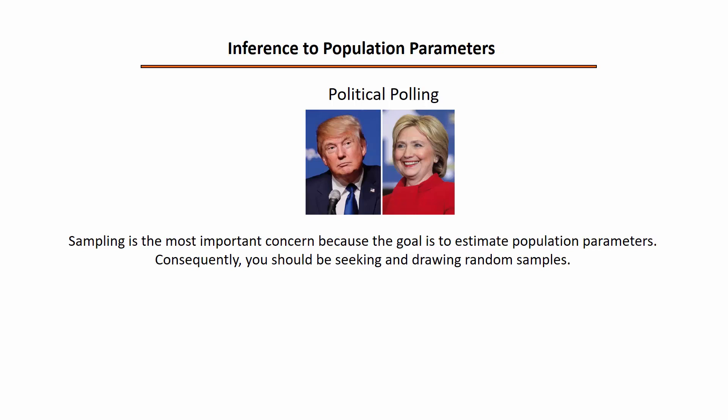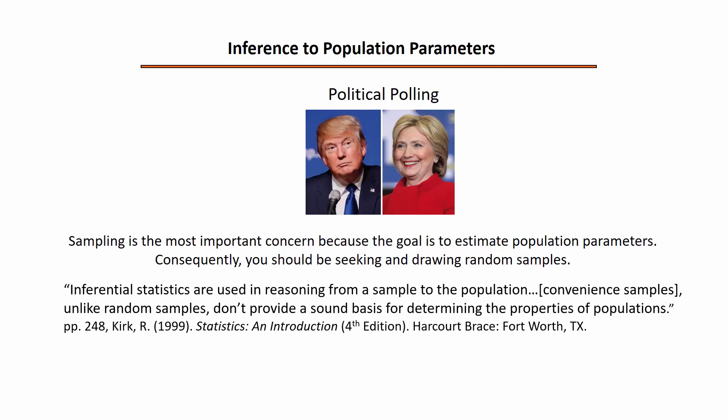How can you be confident that you're not interested in estimating population parameters? As a quasi-litmus test, consider the importance of drawing random samples in your research. Take political polling, for example — the explicit goal is the estimation of population parameters in order to project the winner of a political race. The most important concern for the researcher in this type of work is sampling, because estimates must be unbiased and as accurate as possible. As Kirk points out, inferential statistics are used in reasoning from a sample to a population. Convenient samples, unlike random samples, don't provide a sound basis for determining the properties of populations, and if random sampling is impossible, the political pollster will at least attempt to draw a representative sample.